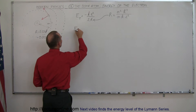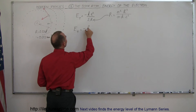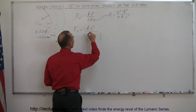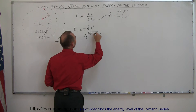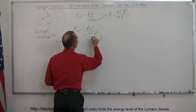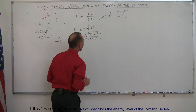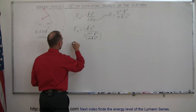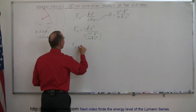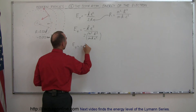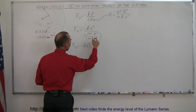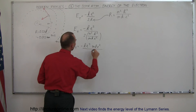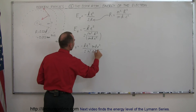The total energy of the electron is equal to minus k times e squared divided by two times the radius. Plugging in the radius expression, we get n squared times h-bar squared divided by mke squared. Now we're dividing by a fraction, which is the same as multiplying by its inverse, so the total energy equals minus ke squared times mke squared divided by two n squared h-bar squared.